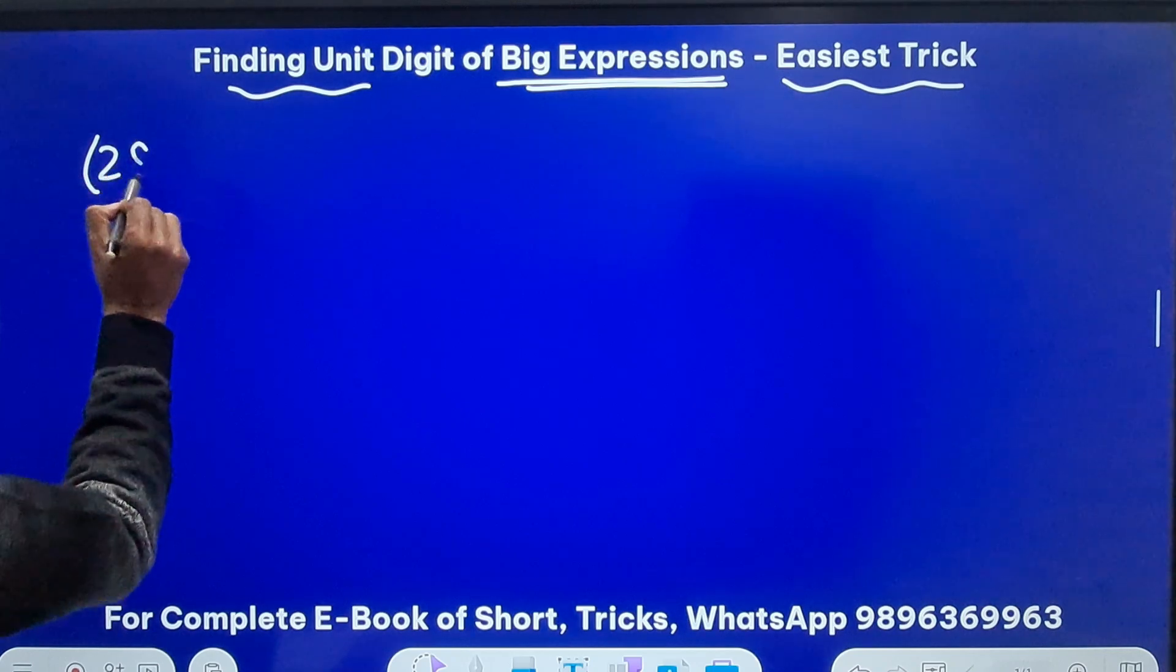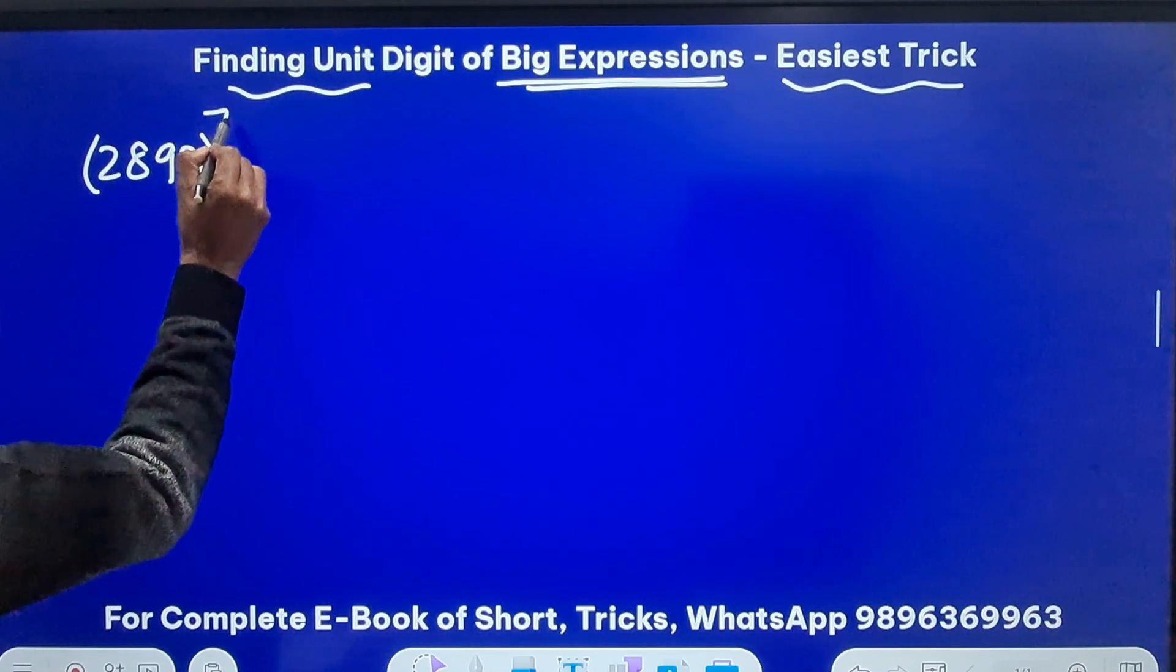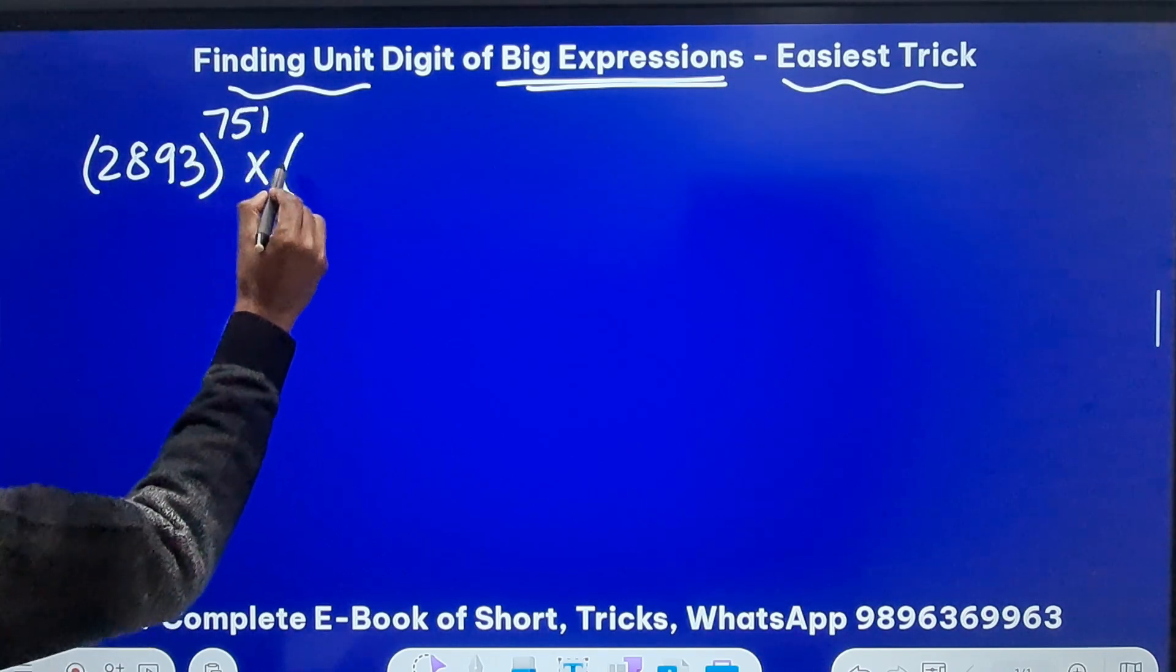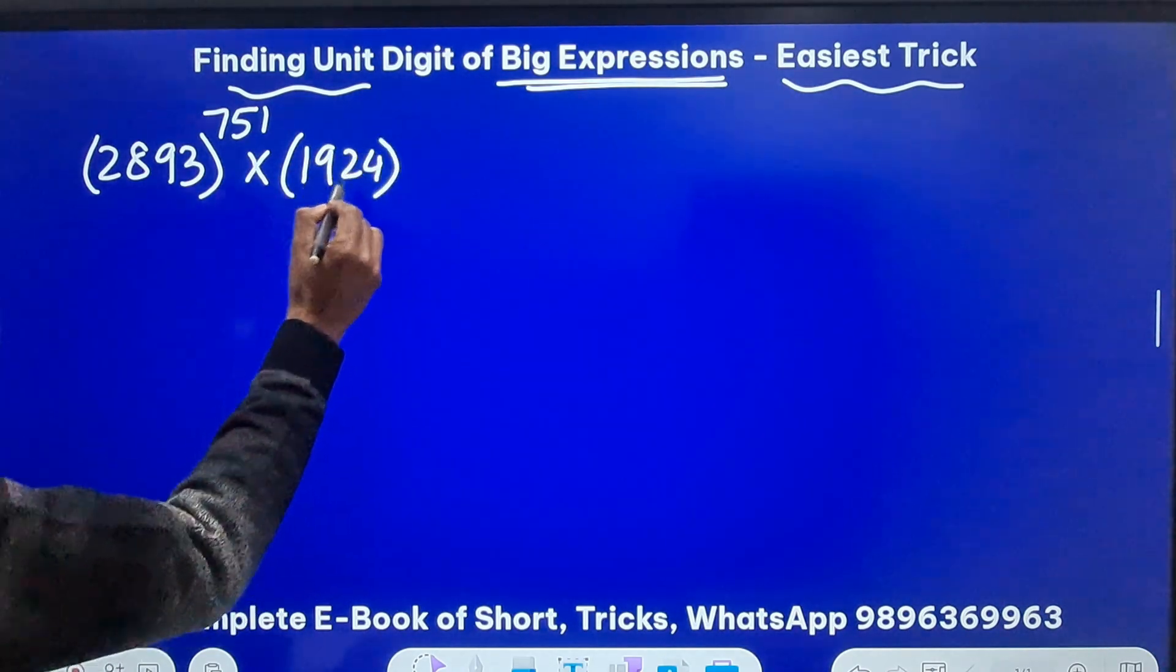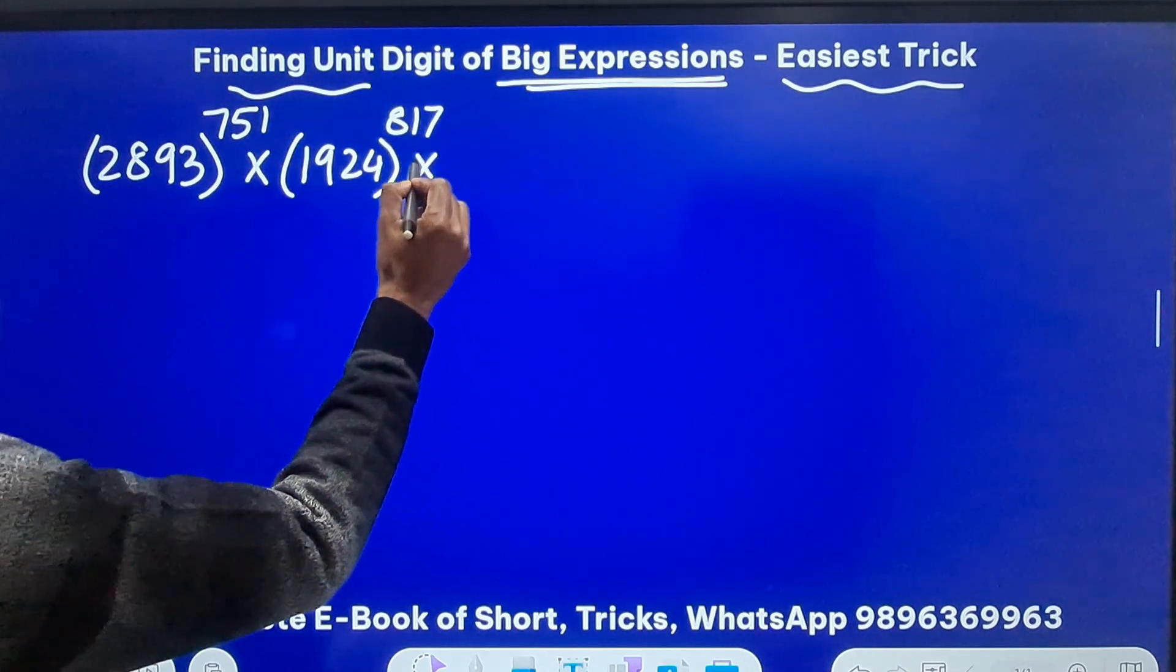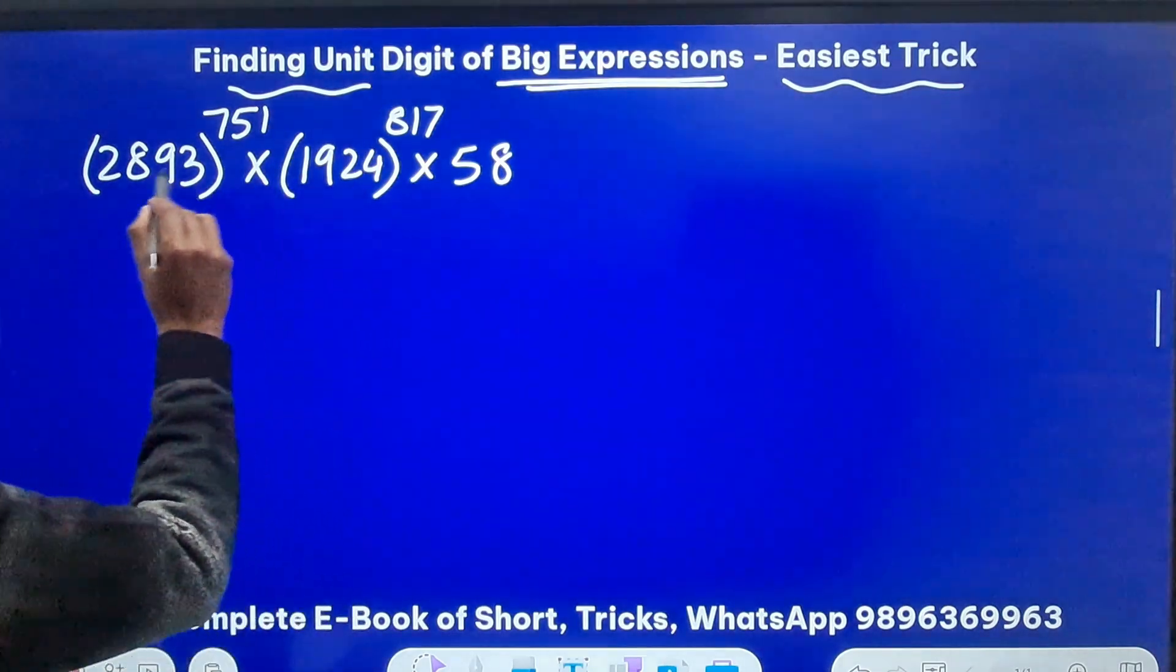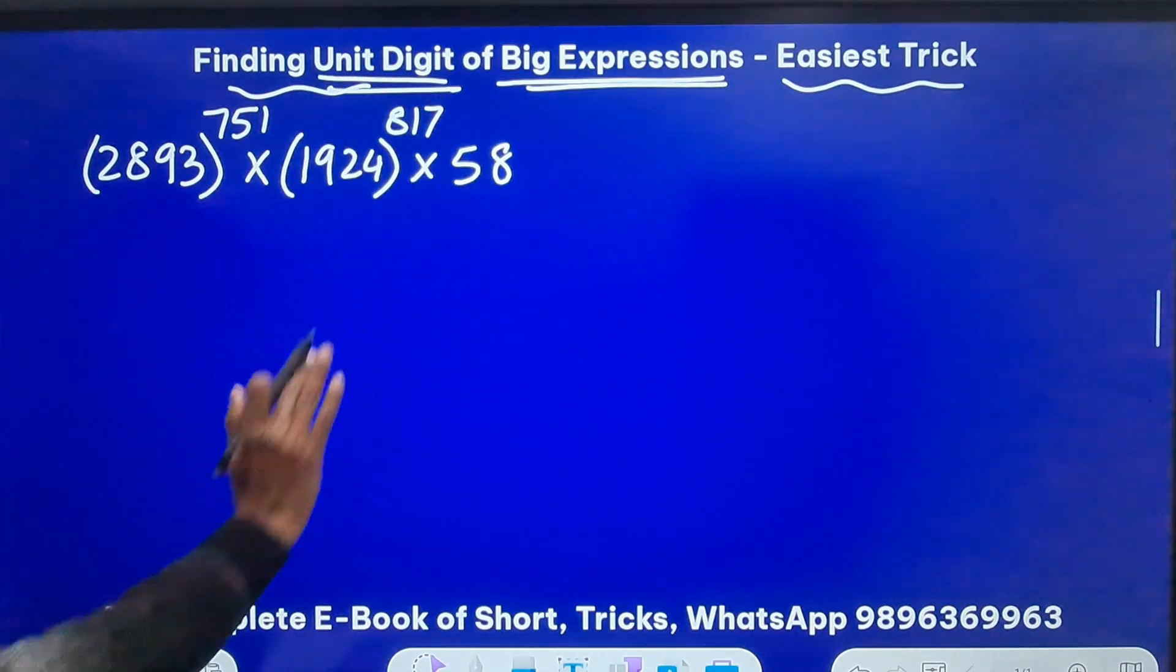It is 2893 as the base and 751 as the power multiplied by another such expression 1924 as the base with 817 as the power and that's not all we are multiplying this by 58. So we need to find the unit digit when we solve this expression.